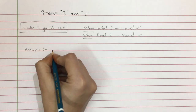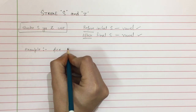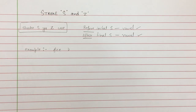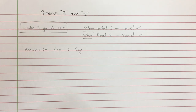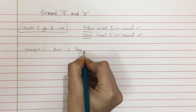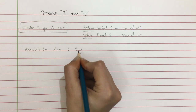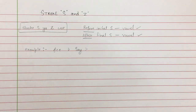जैसे हमें word लिखना है 'ace' — इसमें S से पहले vowel है, A vowel है, long vowel sound है, second place vowel है। इसे हम S लिखते हुए A के vowel को second place पर place करेंगे। और देख लेते हैं जैसे हमें word लिखना है 'say' — S के बाद A की sound है, यह final S भी है और initial भी है, उसके बाद A की sound है। यहाँ पर भी stroke को use करते हुए A की sound इसके बाद लगाएंगे।